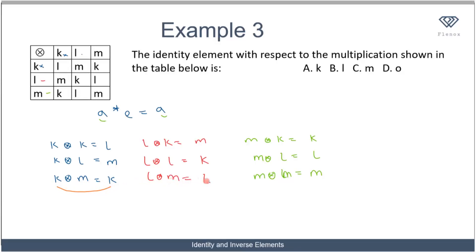But here k equals k, l equals l, and m equals m. So the operations where those conditions hold are: k★m, l★m, and m★m. This tells us that the variable operating with a — which gives a back — is the identity element. Since this condition is fulfilled with k★m equals k, l★m equals l, and m★m equals m, the identity element is m.